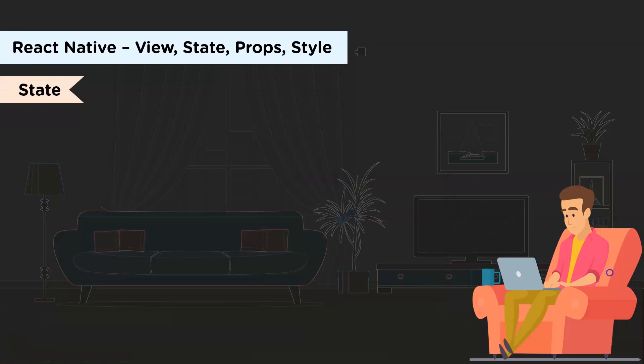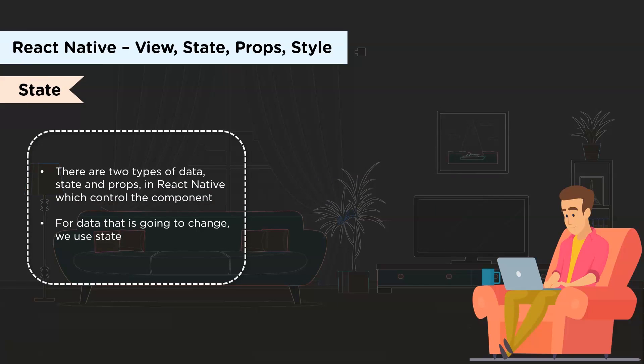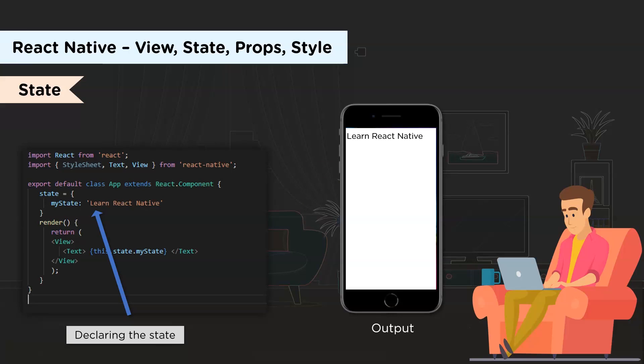Moving on to state — there are two types of data that control a component: props and state. Props are generally set by the parent and are fixed throughout the lifetime of a component. But for data that is going to change, we make use of state. Here you can see the use of this.state.myState in the render method. You can also use the setState method when you want to change it.